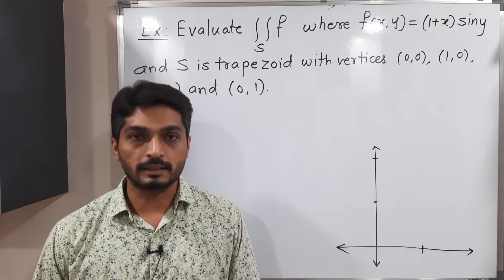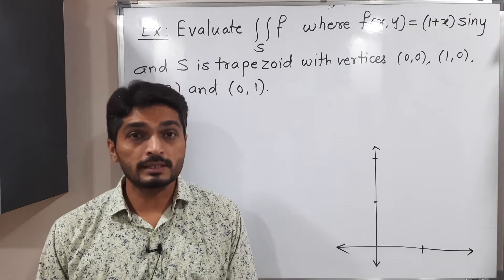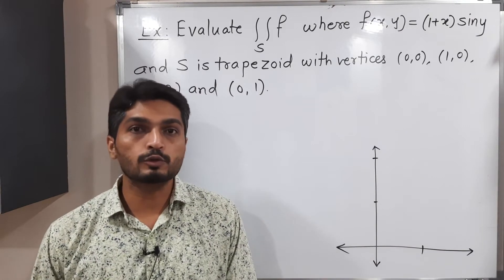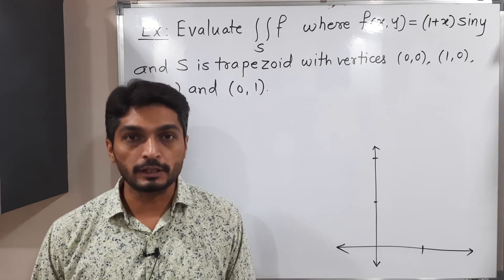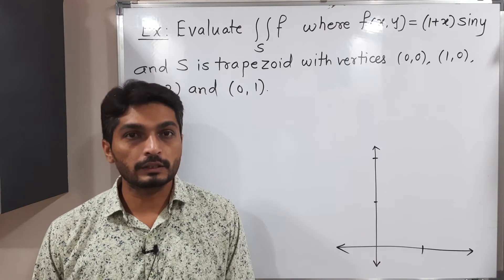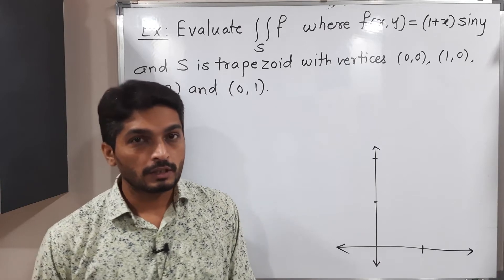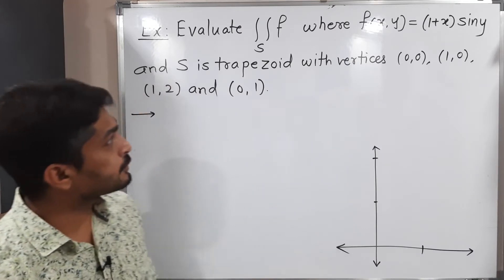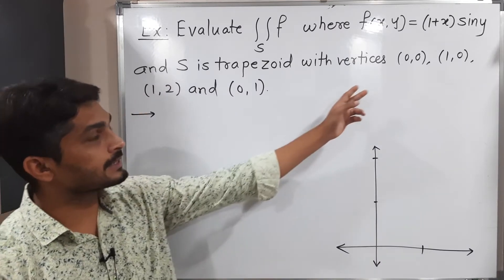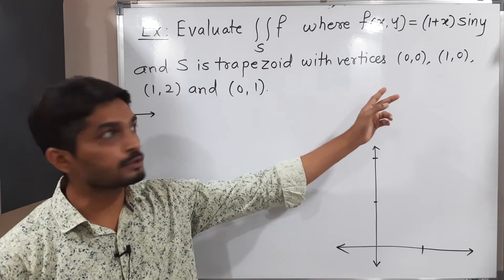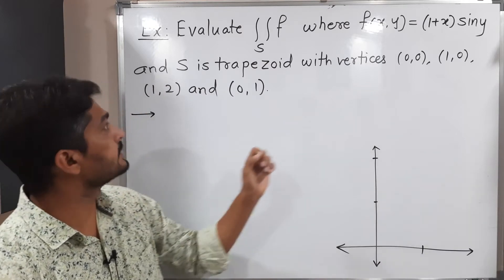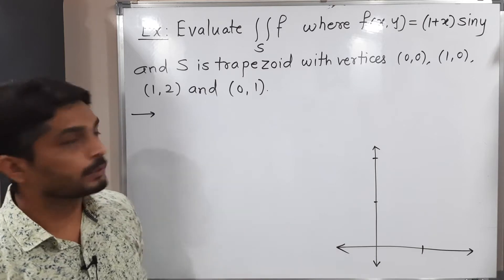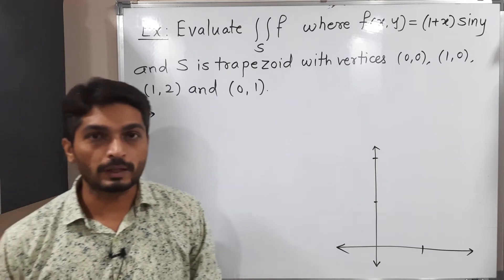Let us discuss this example. We have to solve a double integration where the region is a trapezoid whose vertices are (0,0), (1,0), (1,2), and (0,1).